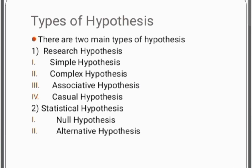Next is associative hypothesis — when a hypothetical statement reflects the relationship between variables that occur in a natural setting without manipulation. If there is a change in any one of the variables, change also occurs in the other variables. Next is causal hypothesis, which predicts a cause and effect relationship between the independent variable and the dependent variable. Here, the independent variable is thought to cause or determine the presence of the dependent variable. These are the subtypes of research hypothesis.